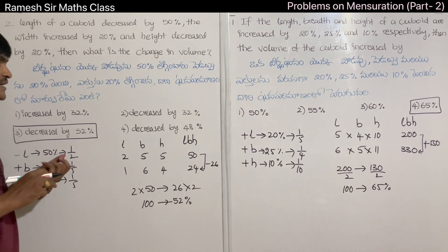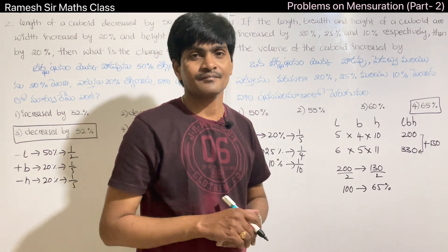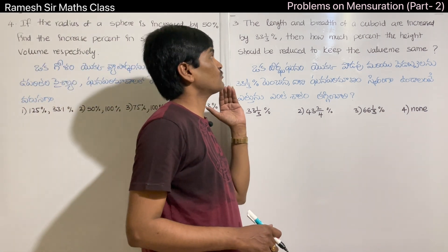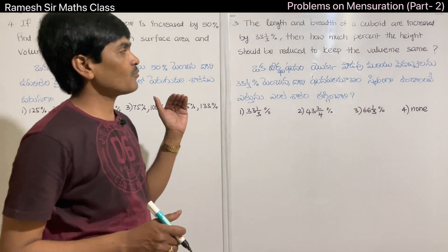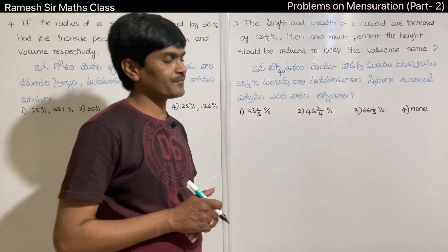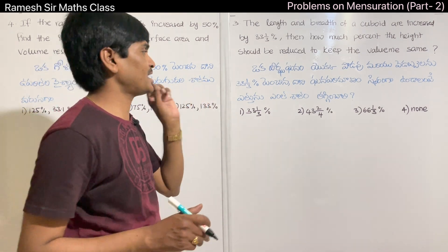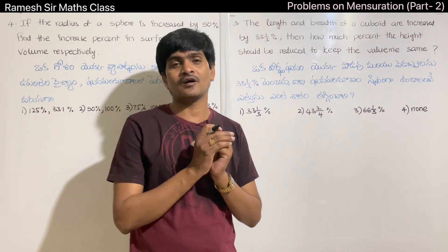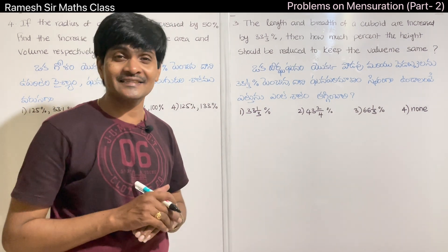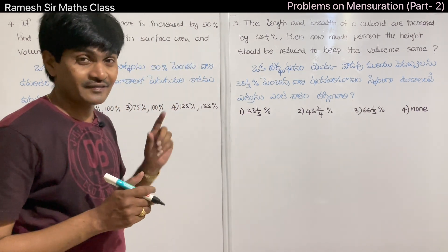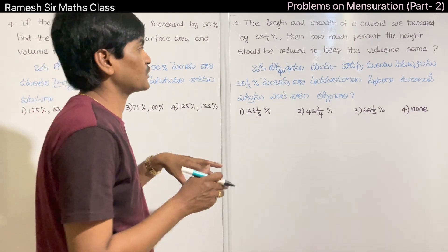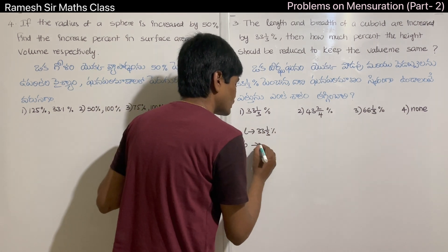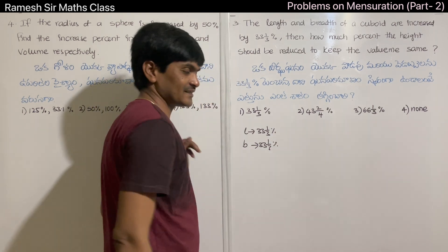Problem 3: The volume of a cube is increased by 33 and 1/3 percent. Then by how much percent should the height be reduced to keep the volume the same? The area increases more than the height, so we need to reduce the height accordingly. The increase is 33⅓.